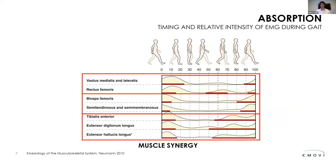Looking more deeply at the quadriceps: at heel strike there's a co-contraction with the hamstrings. At zero percent of gait, both hamstrings and quadriceps are highly activated together — a bracing for impact — so the knee approaching its extended position is controlled and doesn't lock into full extension. But as soon as you heel strike, the hamstrings must completely shut down. In the first 10%, they go almost to zero, letting the quadriceps do their eccentric absorption job alone.